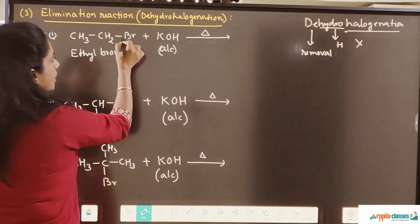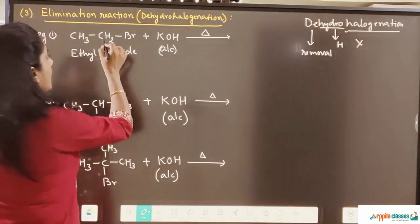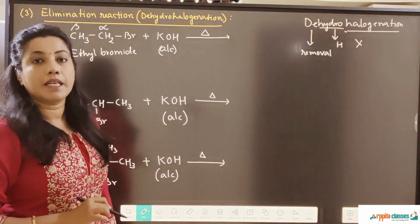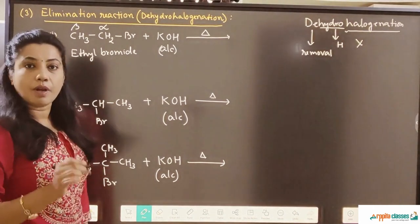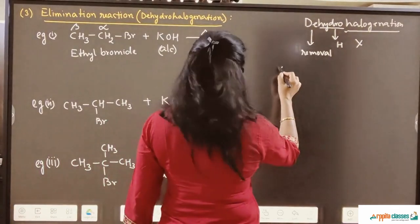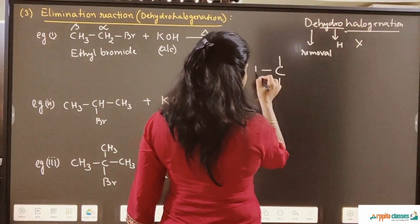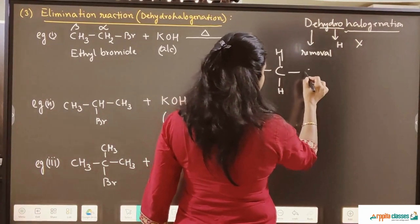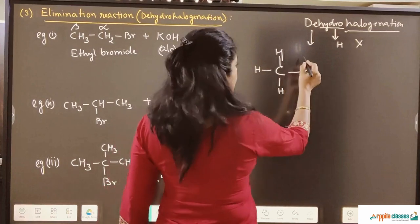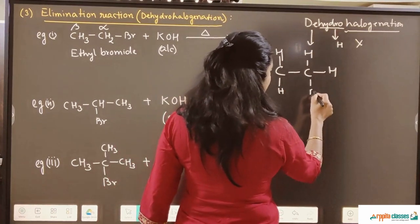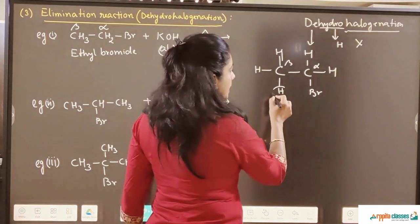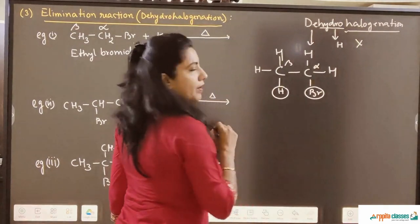Where the Br is attached, that carbon is called the alpha carbon, and the adjacent carbon is called the beta carbon. From the beta carbon, hydrogen will come out, and from the alpha carbon, Br will come out. This is your ethyl bromide — I am writing the full open structure of ethyl bromide. This is your alpha carbon, this is your beta carbon. From the beta carbon the hydrogen will come out and from the alpha carbon the Br will come out.